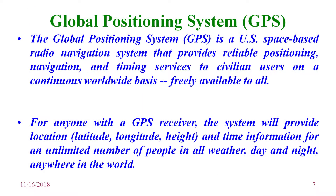GPS was basically started by the United States as a space-based radio navigation system, designed for navigation and military purposes. Nowadays it is used for civilian purposes and is freely available worldwide. It is an all-weather system. Any GPS receiver can determine the location of a point — latitude, longitude, and height — and also provides very accurate time. It is a reliable system working from 1996 to date, providing lots of information.